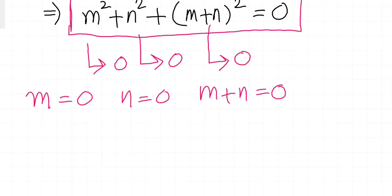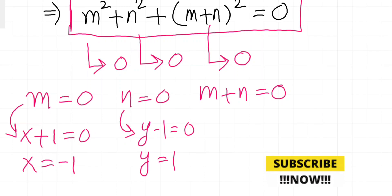M means x plus one is zero—this was our substitution—so x is minus one. And n was y minus one equals zero, so y equals plus one. No need to calculate this one because we are going to have the same value.